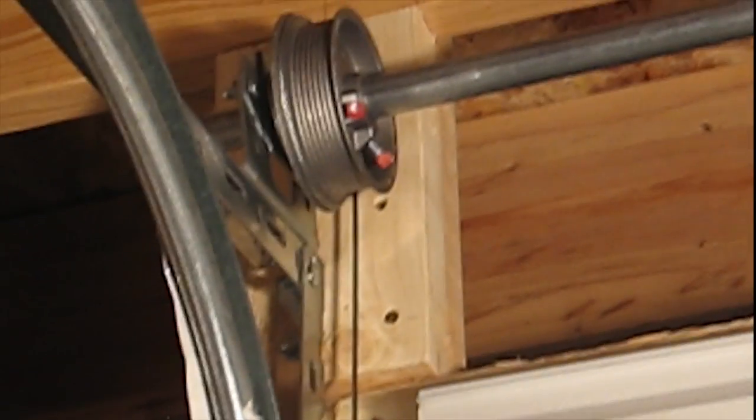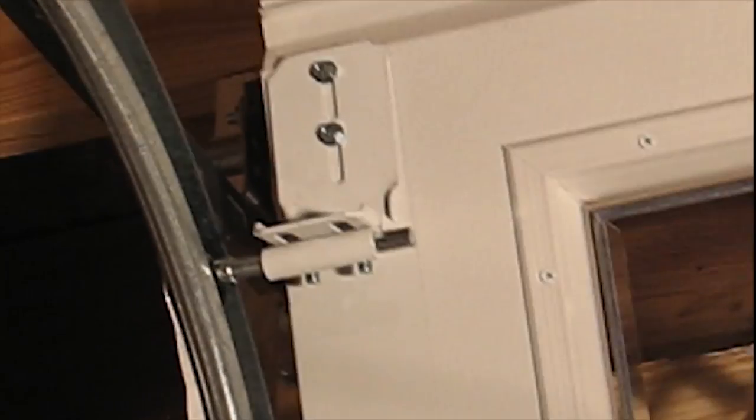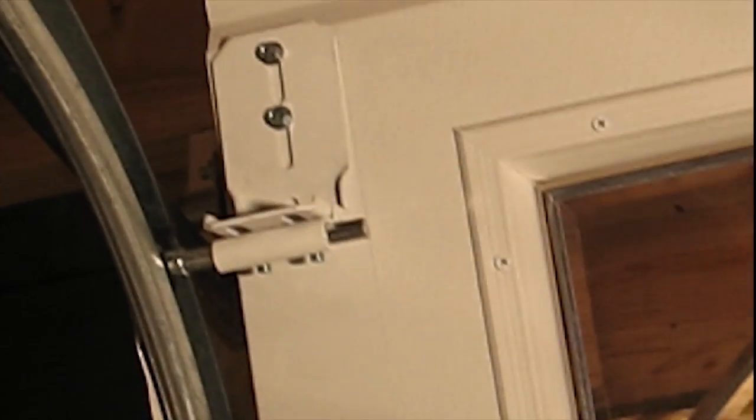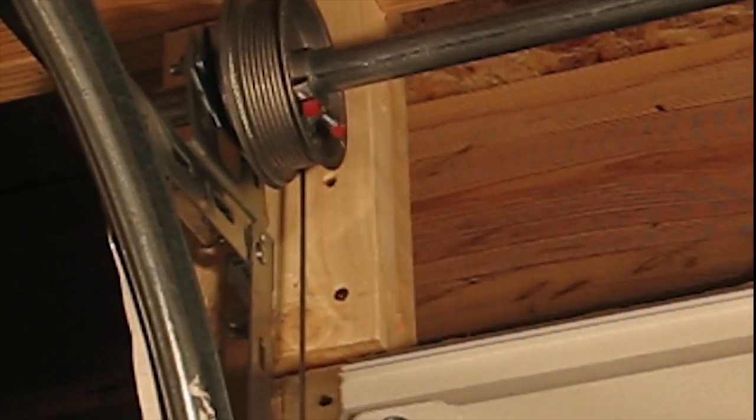The CableSafe device is a product that effectively solves the problem of the cables becoming dislodged from the cable drums and is a safety feature that should be used on all door installations to prevent injury.